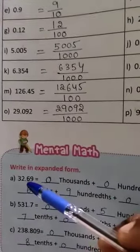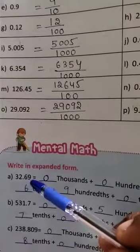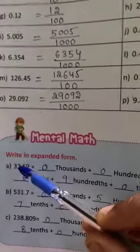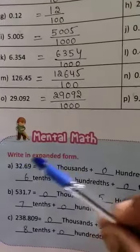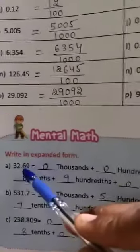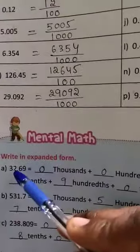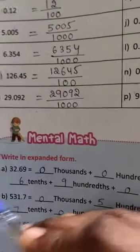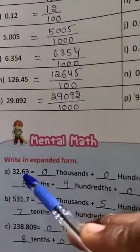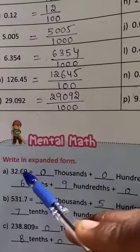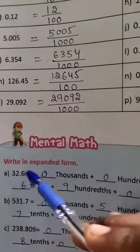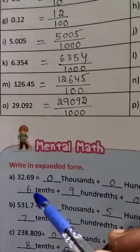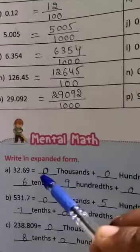The next one is 32.69. If you want the first place values, the first place values can be easier. You will remember the first place values.